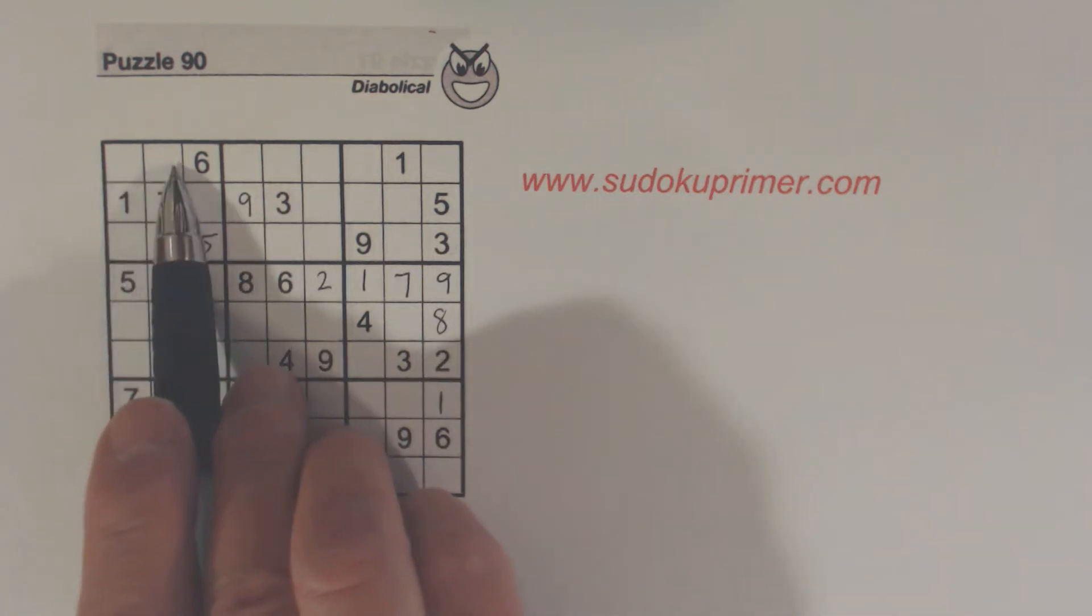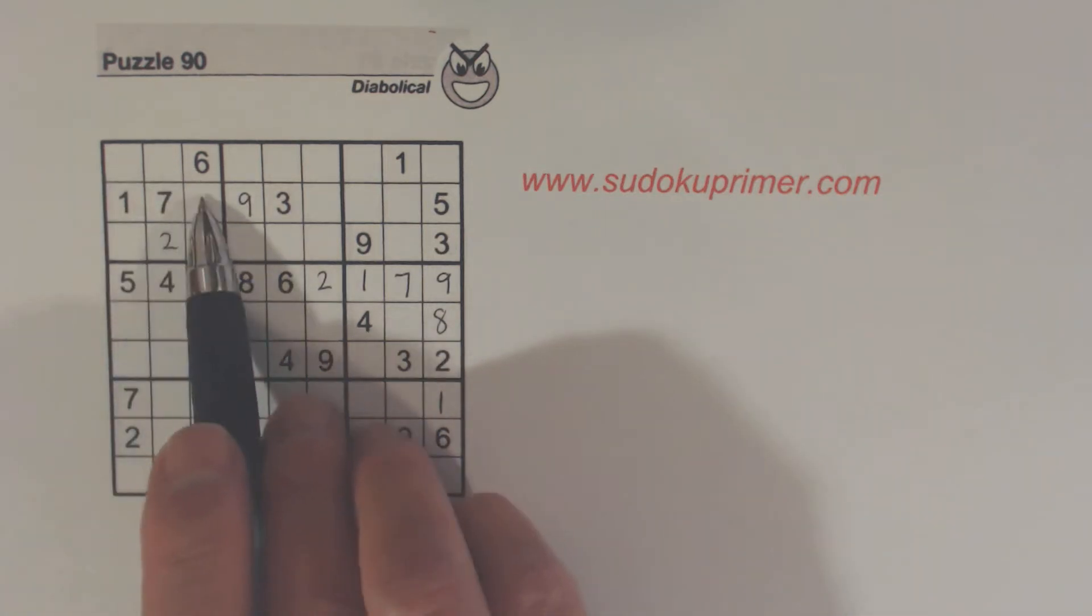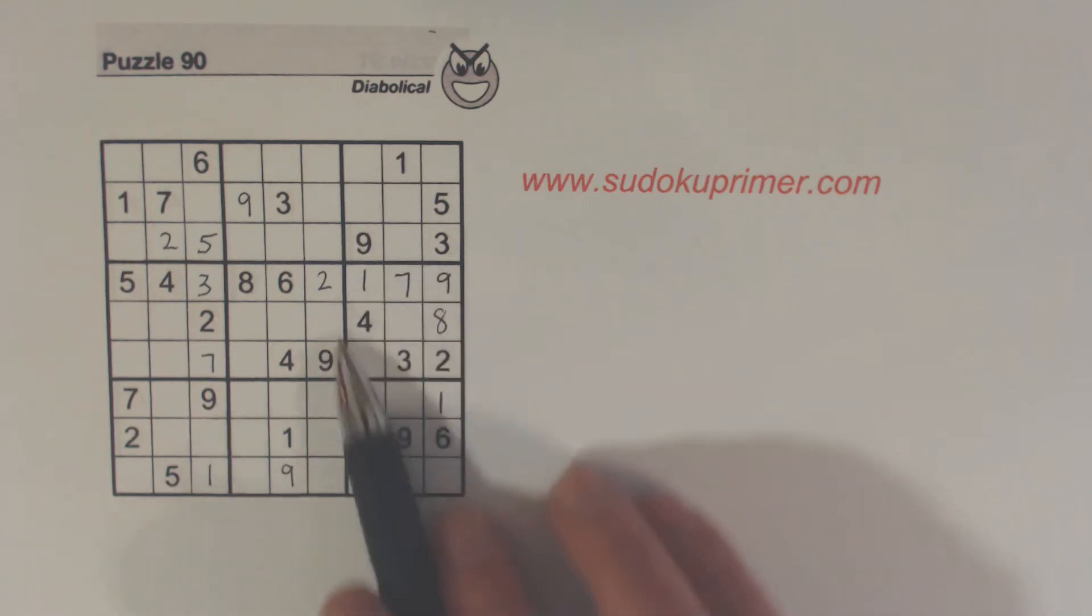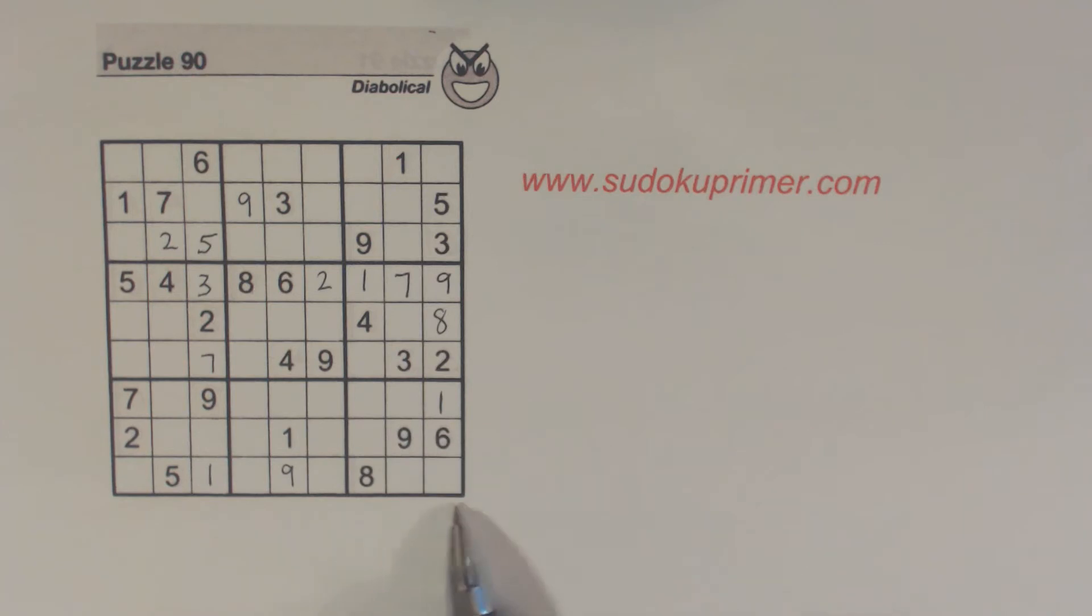We do know we have 3 9 twins here, and therefore we have 4 8 twins here. But of course there's 5, 6 twins here by virtue of the fact there's only 2 cells empty in this box. But we can't solve any of those, and there's not much we can do.